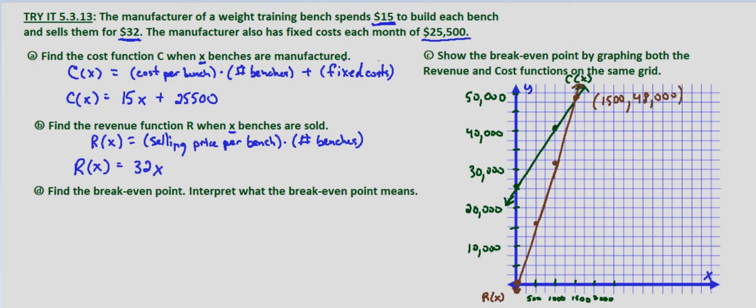In Part D, we're asked to find the actual break-even point. What does break-even point mean? That means when the revenue equals the cost. So we want to know, when does C of X equal R of X? When does cost equal revenue? So we just simply set these equal to one another.